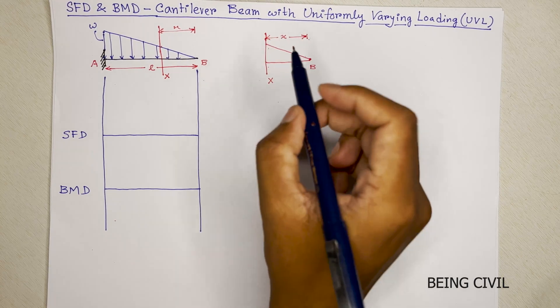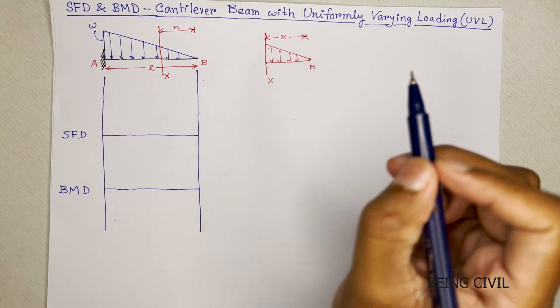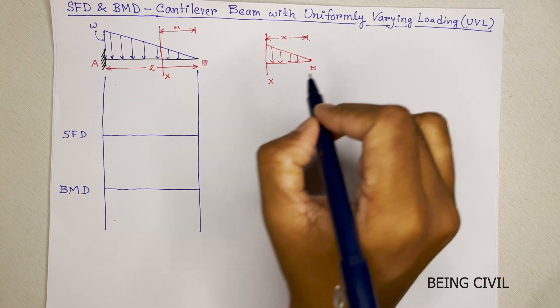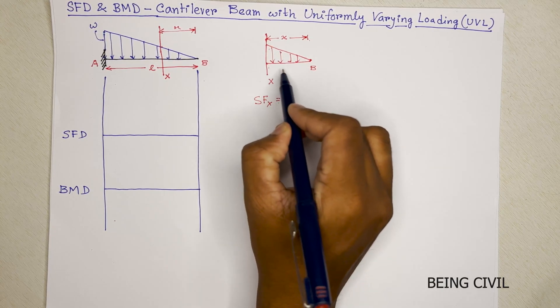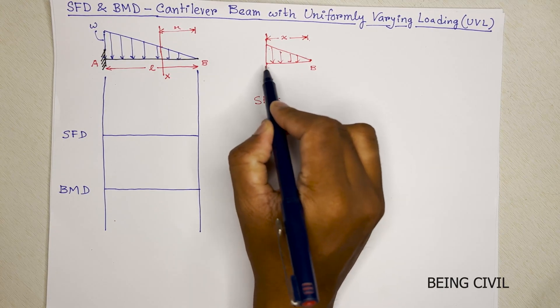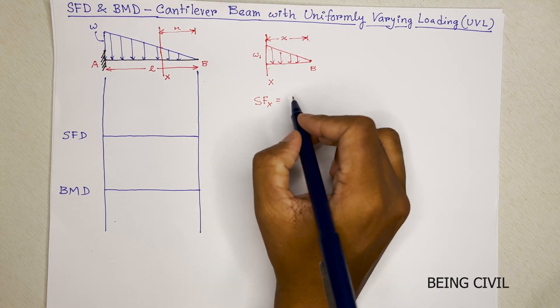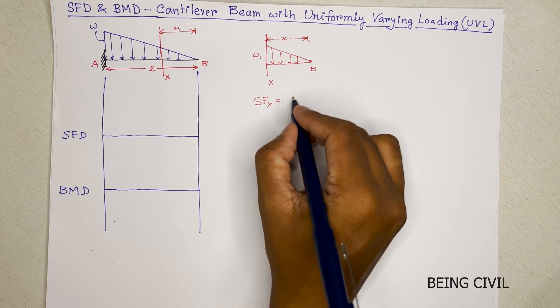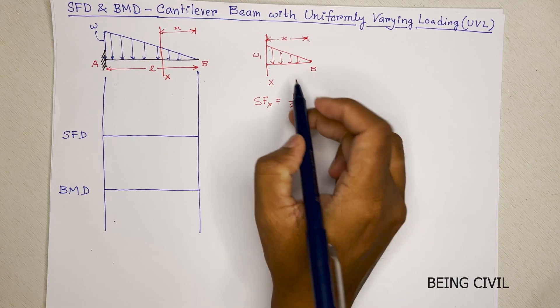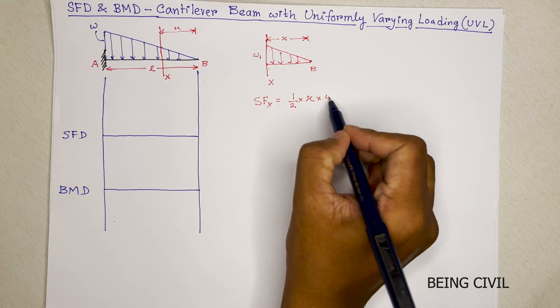Now, we will calculate the shear force at this section. SFx will be the loading of this small triangle. So if this is W1, the loading at section x is the area of this triangle. So half base is x and height is W1.